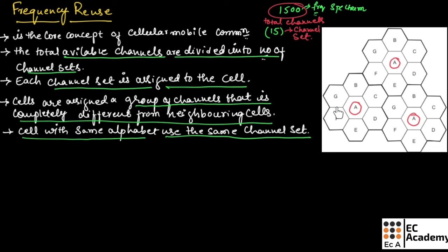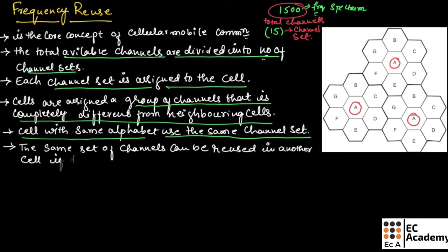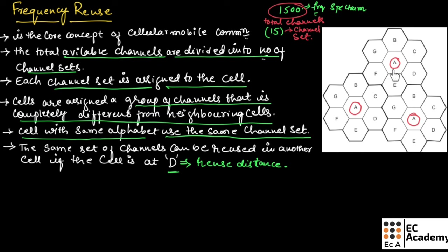The cell named F will use the same channel set. You need to remember that the same set of channels can be reused in another cell if that cell is at a distance of capital D. This capital D is known as the reuse distance. To reuse the same set of frequencies, the cells should be at a distance of capital D, which can be denoted as D = √(3N) × R. This is the formula for reuse distance.